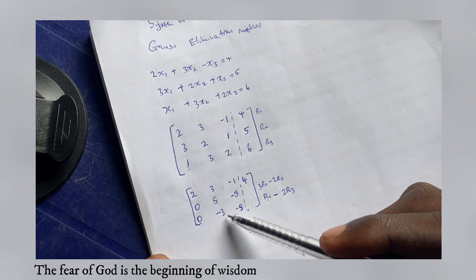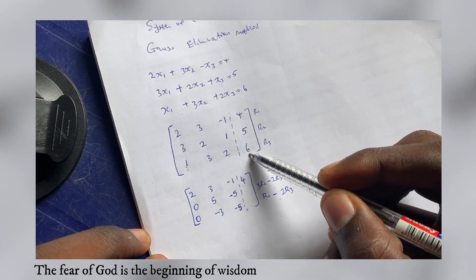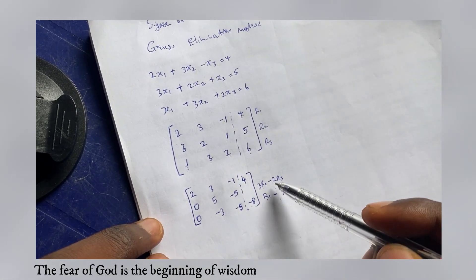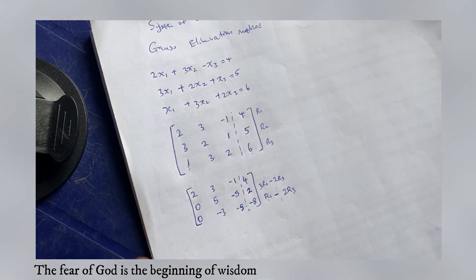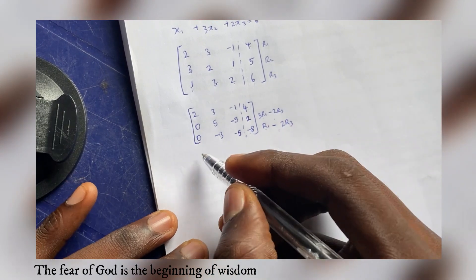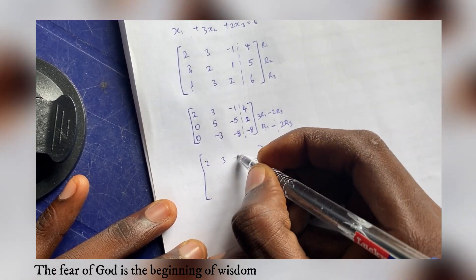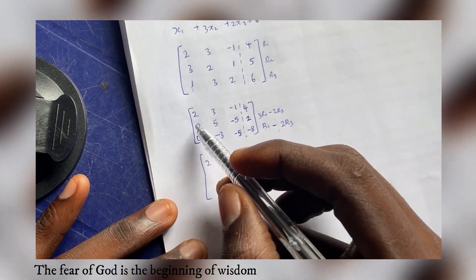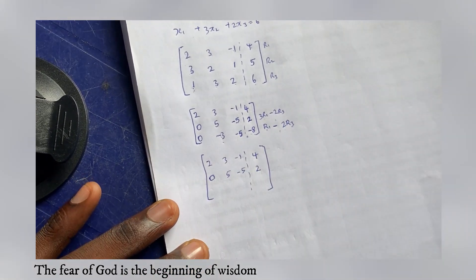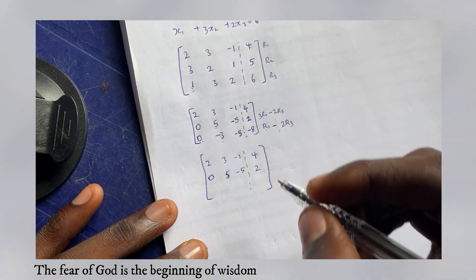For the augmented column: R1 minus 2/3 of R3 gives 4 minus 12 = -8 and for 3R1 minus 2R3 that's 12 minus 10 = 2. So our updated matrix now has row 1 unchanged [2, 3, -1 | 4], and new rows below with zeros in the first column.